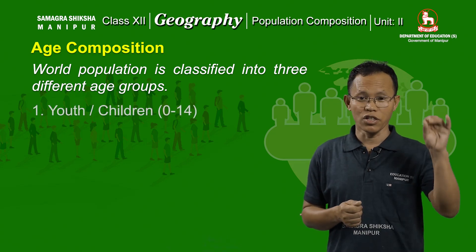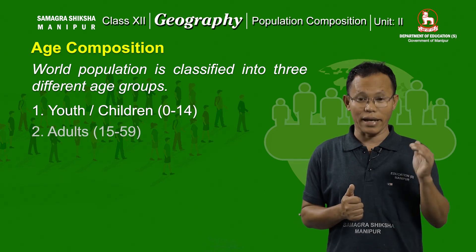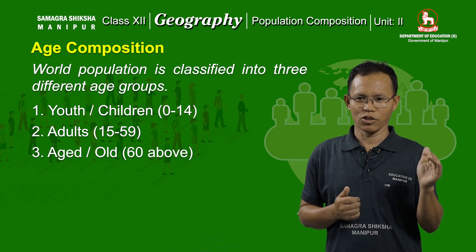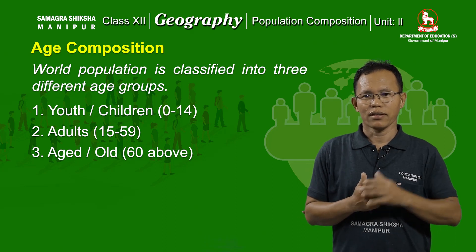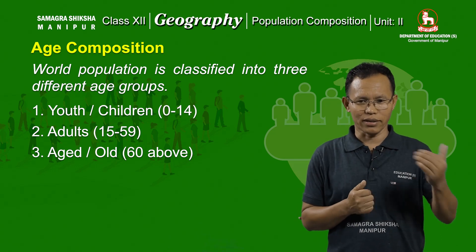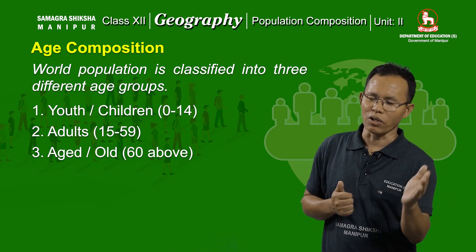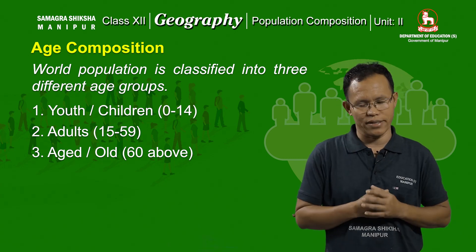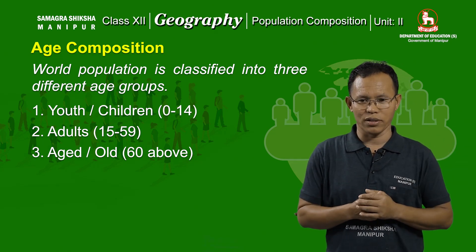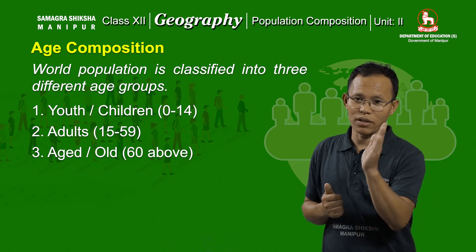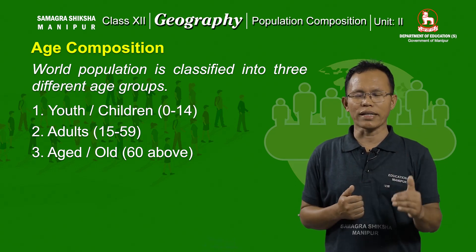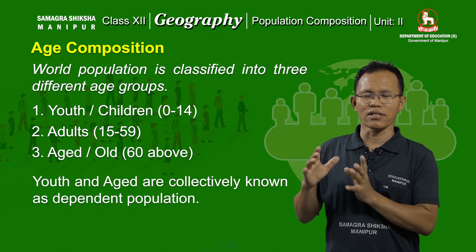The first group is youth. The second is adult. The third is aged or old. The youth age group are those populations belonging to age group 0 to 14 years of age. The adult population belong to 15 to 59 years of age. The aged population belong to age group 60 and above. The first and third age groups — youth and aged — are collectively known as dependent population.